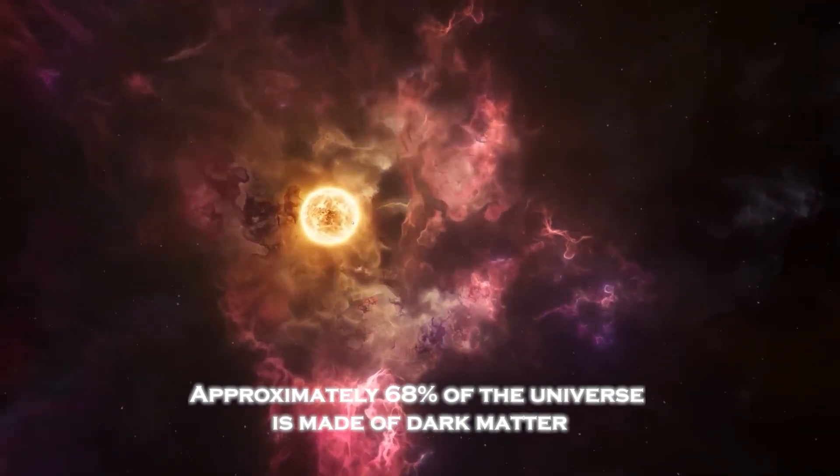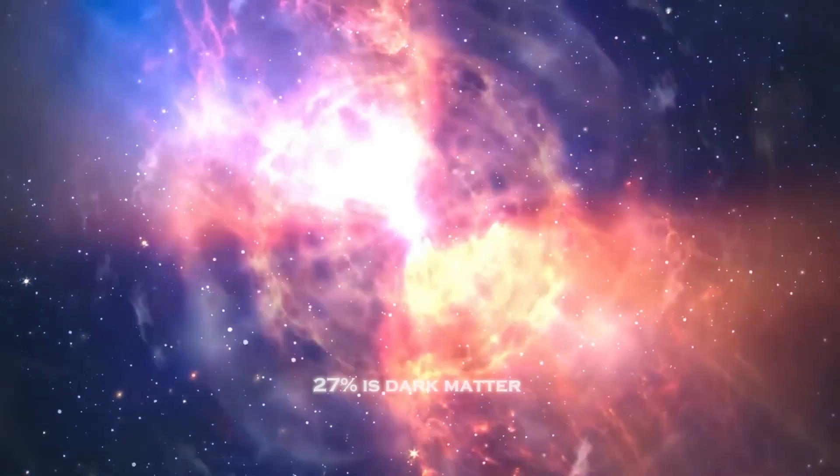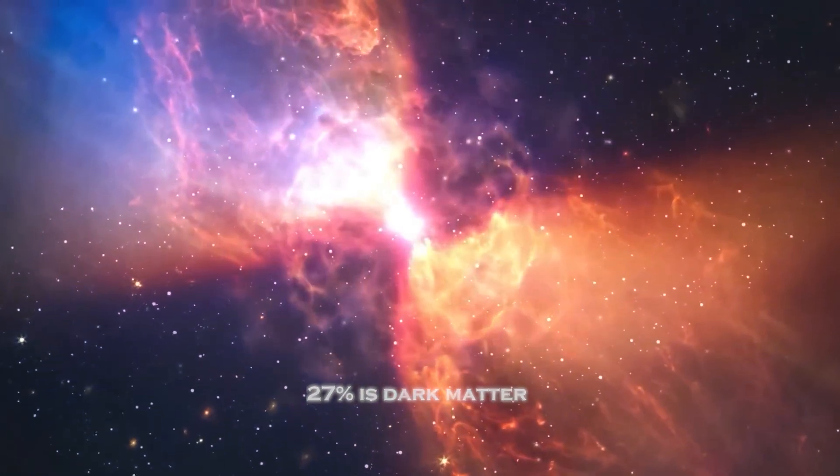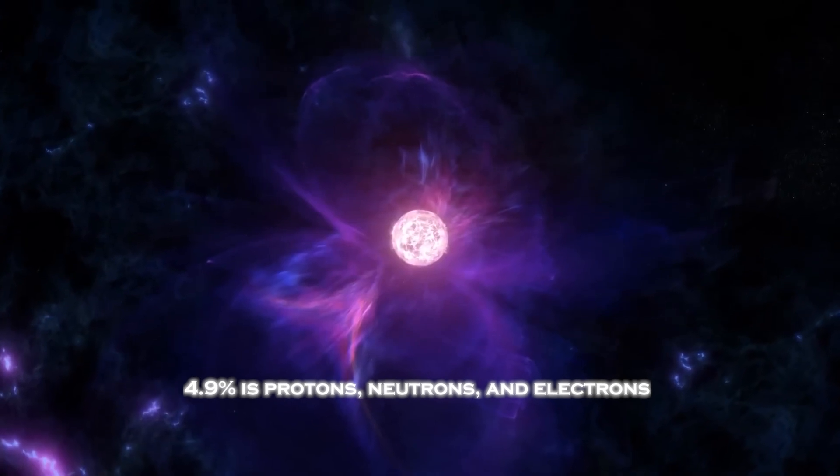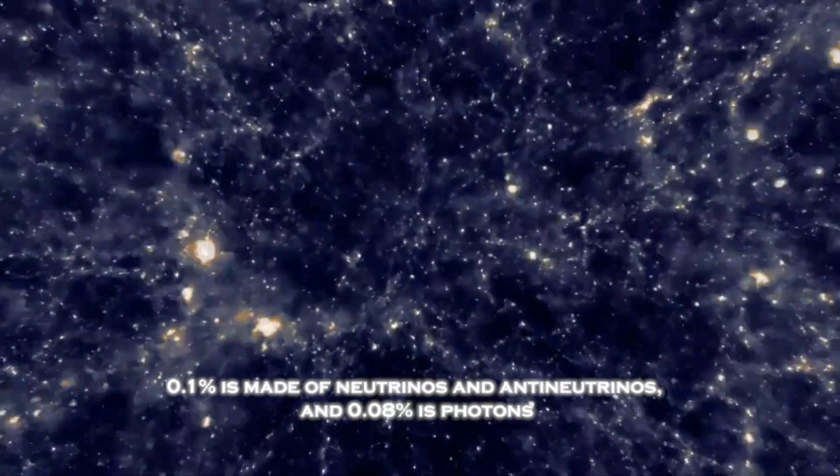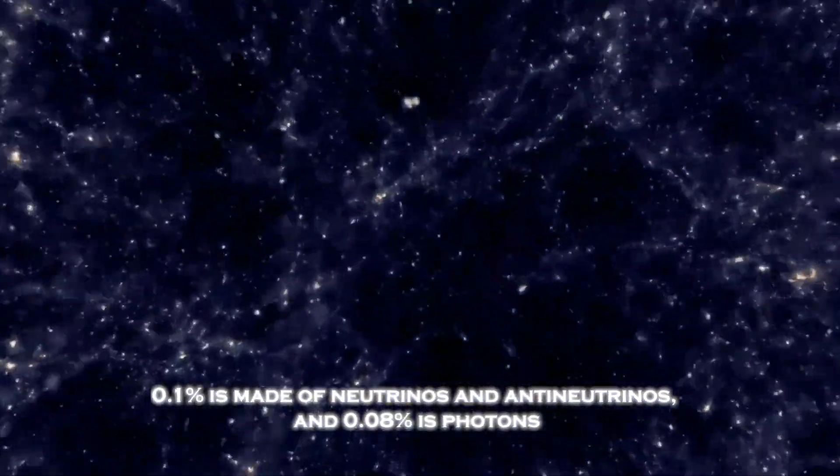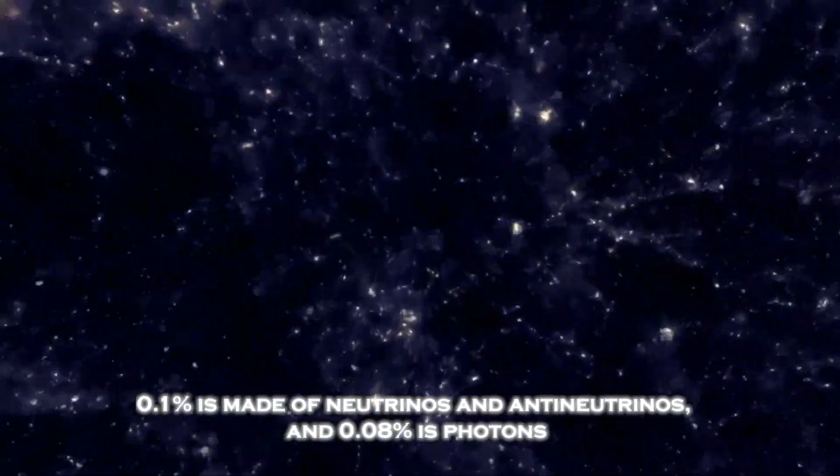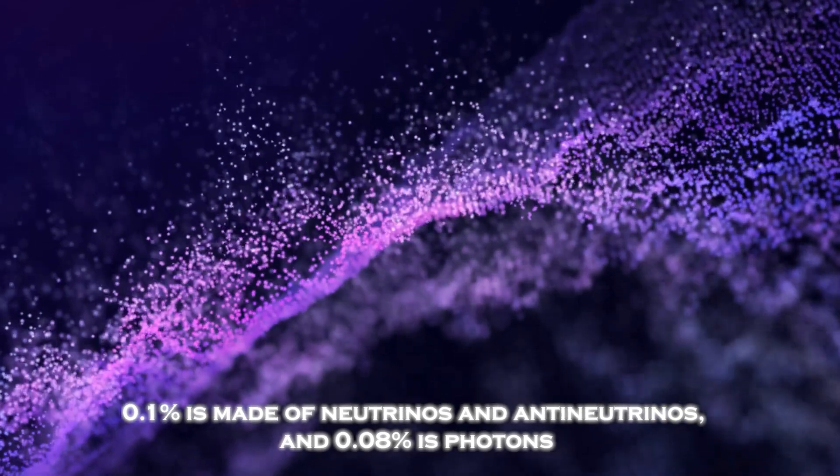Approximately 68% of the universe is made of dark energy, equivalent to a cosmological constant. 27% is dark matter and about 4.9% is protons, neutrons and electrons. Only 0.1% is made of neutrinos and antineutrinos and 0.08% is photons.